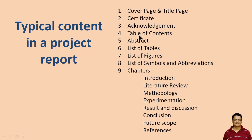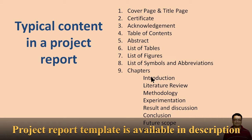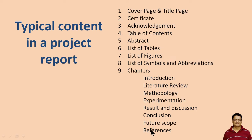A typical project report consists of the following things: a cover page or title page, a certificate, acknowledgement, table of contents, abstract, list of tables, list of figures, list of symbols and abbreviations, and then the chapters begin. Typical chapters consist of introduction, literature review, methodology, experimentation, result and discussion, conclusion and future scope, and references. You can change these according to your needs.